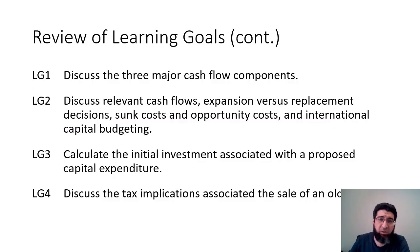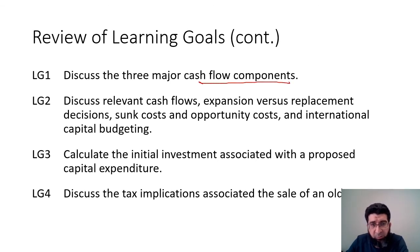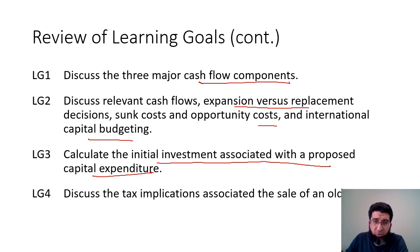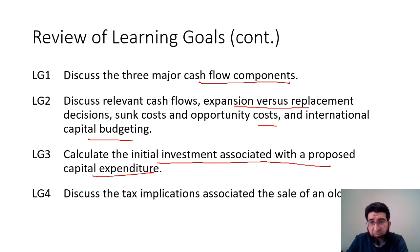In this session, we looked at the different cash flow components and discussed incremental cash flow, expansion versus replacement decisions, sunk cost, opportunity cost, and challenges in international capital budgeting such as currency and political risk. We also calculated the initial investment associated with a proposed capital expenditure for both expansion and replacement projects, noting that all projects are replacement decisions — becoming expansion decisions when the old asset's cash flows equal zero. We also covered the tax implications associated with the sale of an old asset.